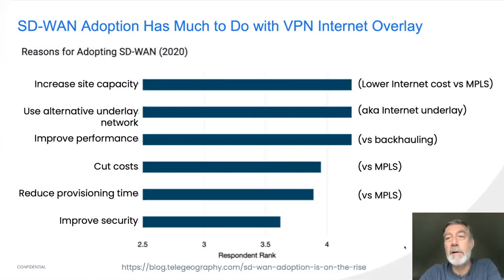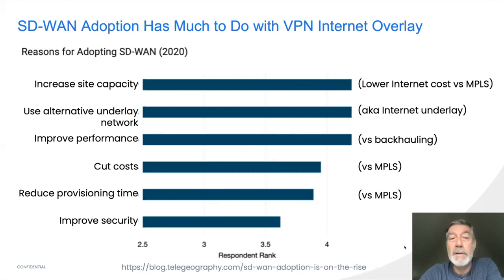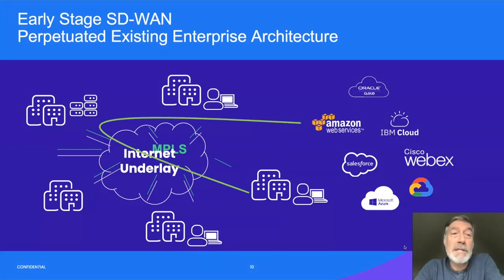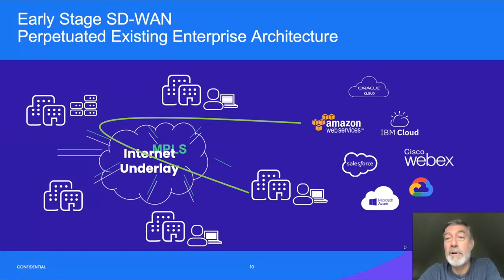SaaS and cloud also required more bandwidth than you typically got to a branch office through an MPLS connection. A Telegeography survey shows why people started adopting SD-WAN: most of it is about increasing bandwidth to sites at a lower cost than MPLS, and doing it over the internet was more responsive than working through a telco provider. Early stage SD-WAN deployments essentially perpetuated the existing enterprise architecture — you ended up with two underlays running to all the branches, and the SD-WAN overlay tried to emulate the connectivity you had in the MPLS network.